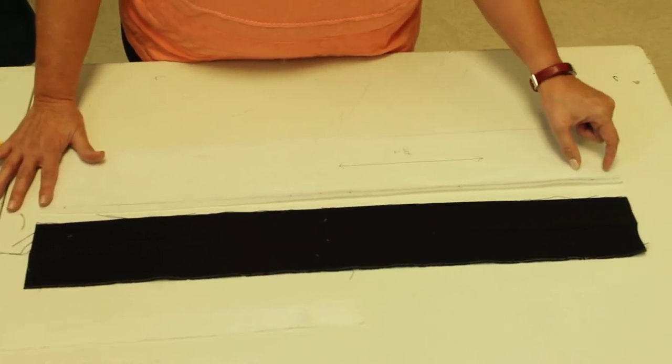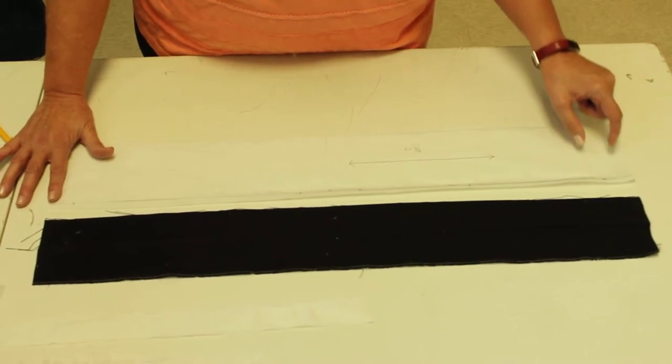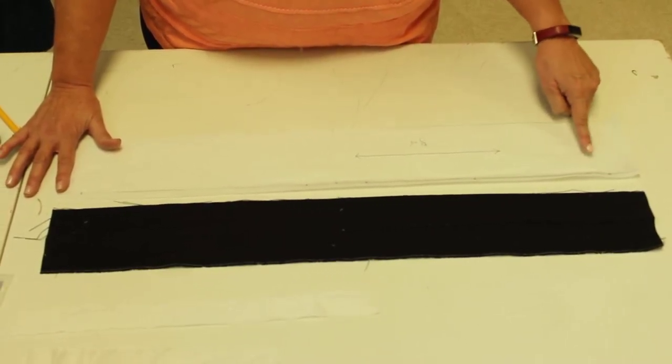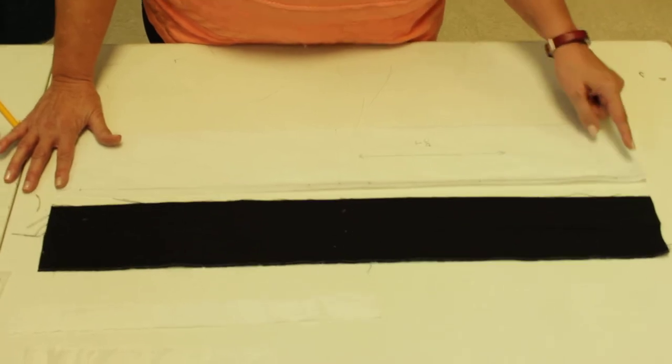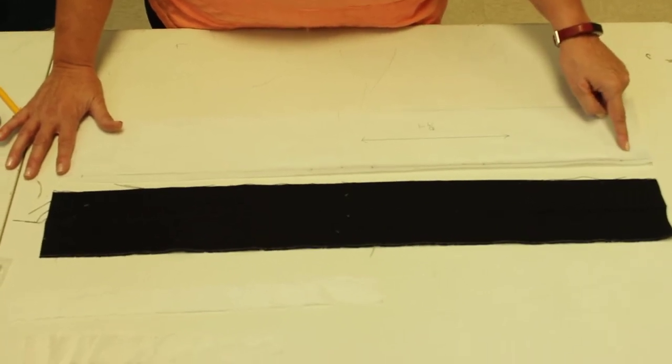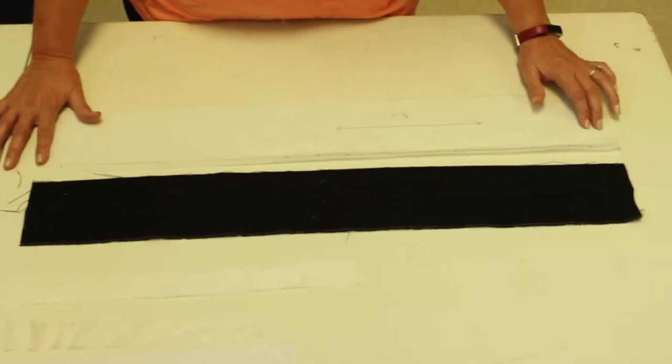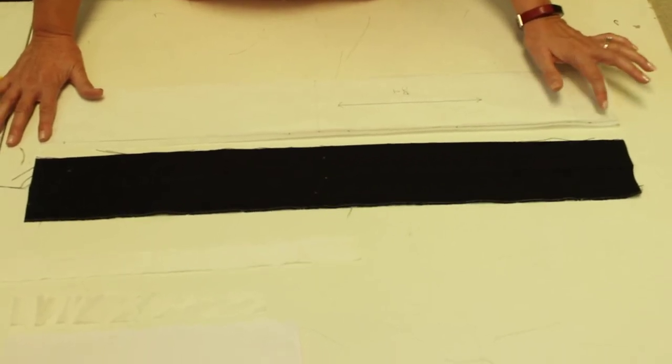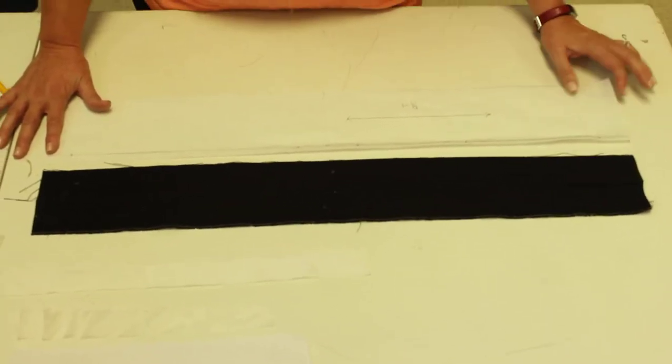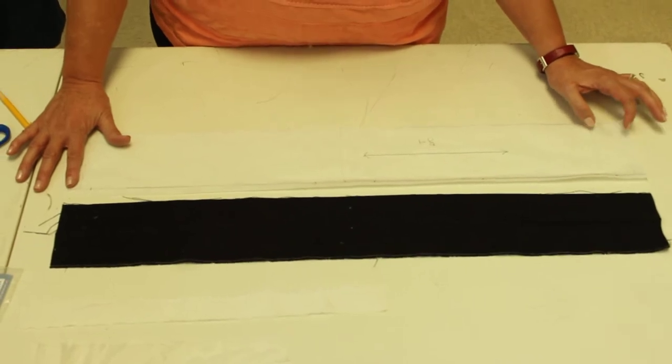And you also need an inch and a half for the underlap. Okay, so that inch and a half will give you room to put your hook and eye, your skirt hook and eye. And some people like to do a button and a hook and eye, maybe two hook and eyes, or whatever you want. But an inch and a half will be plenty of length.